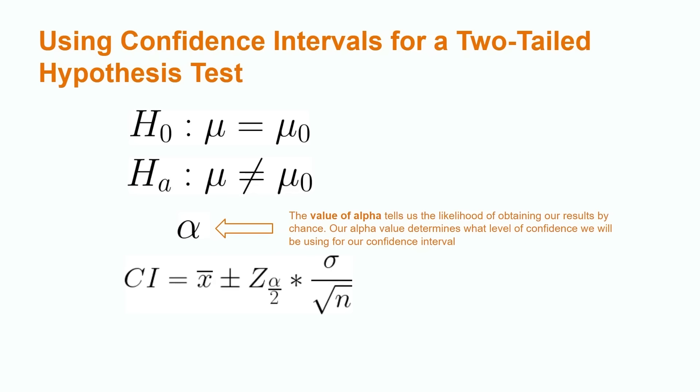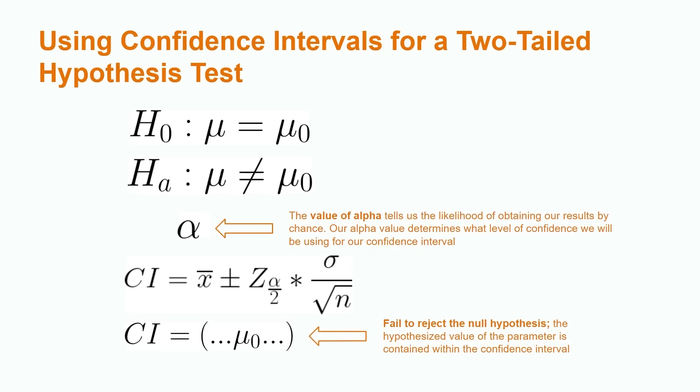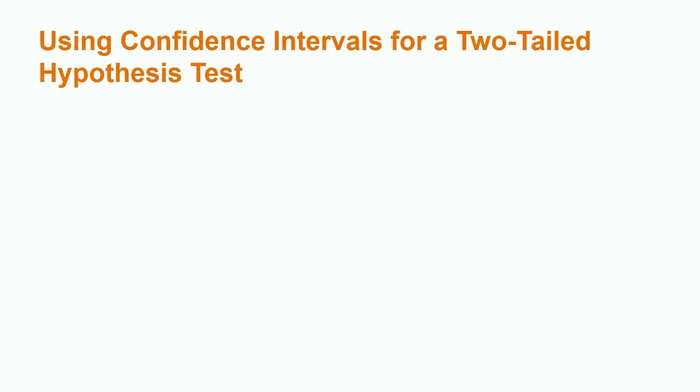If the hypothesized value of a parameter is contained within the interval, then we fail to reject the null hypothesis. However, if it is not contained within the confidence interval, we reject the null hypothesis. In this example, the hypothesized value for the population mean, mu naught, is contained within the interval. Therefore, we would fail to reject the null hypothesis.